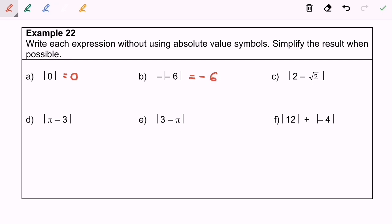C, modulus of 2 minus square root of 2. We will have 2 minus square root of 2. D, modulus of pi minus 3 and we will have our answer pi minus 3.